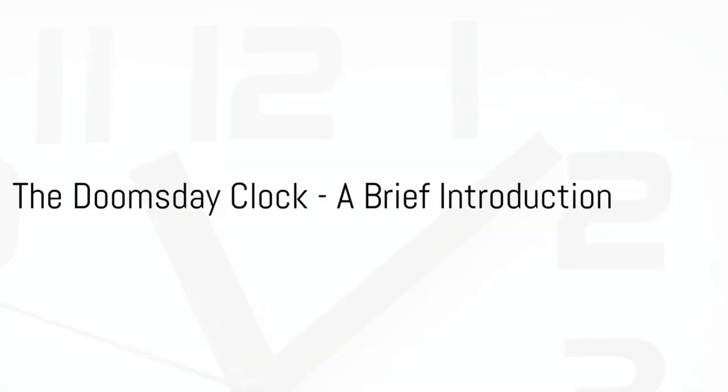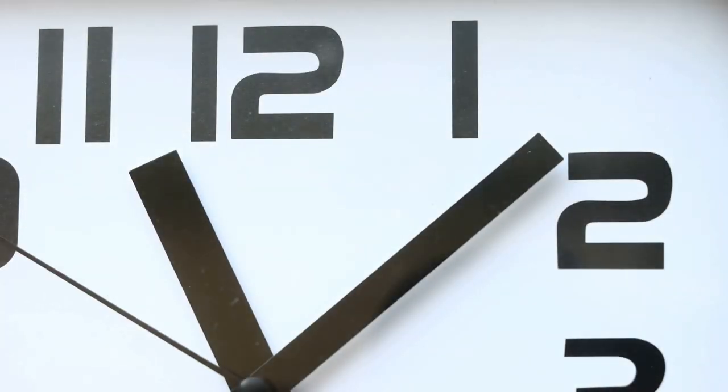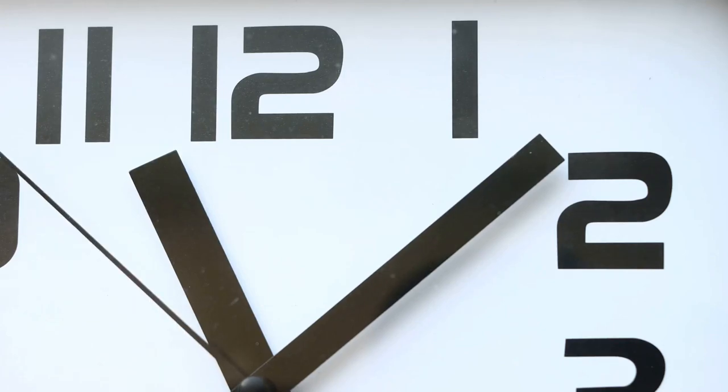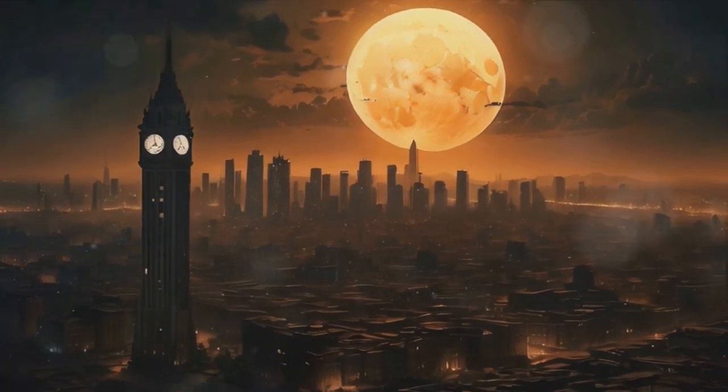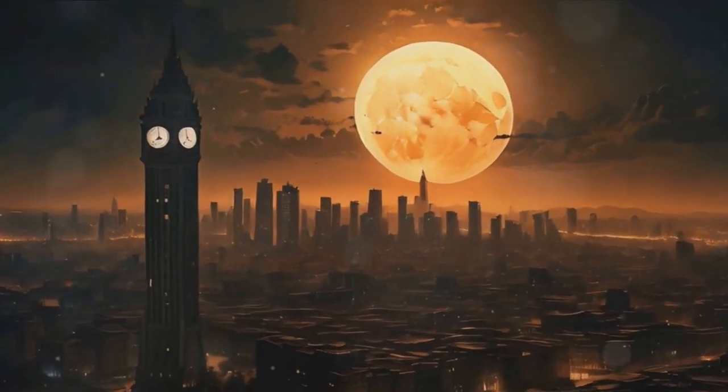What if humanity had a countdown timer to its own potential destruction? Well it does and it's called the Doomsday Clock. This symbolic timepiece first created in 1947 serves as a stark reminder of our planet's vulnerabilities.